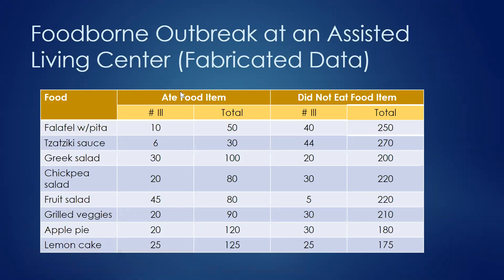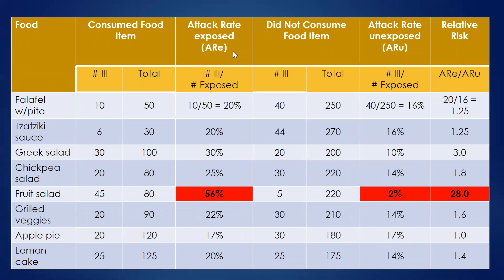You want to separate people who ate each food item from people who didn't. People who ate the food item were the exposed group, and people who didn't eat it were the unexposed group. For example, 10 out of 50 people who ate falafel got sick, and 40 out of 250 people who didn't eat the falafel got sick. So for the exposed group, that's 10 out of 50, or 20% — so our attack rate for eating falafel was 20%. You just go down the column and calculate those attack rates for each food item.